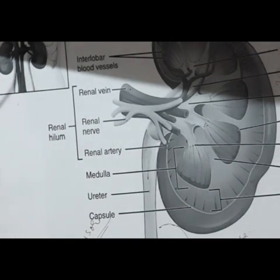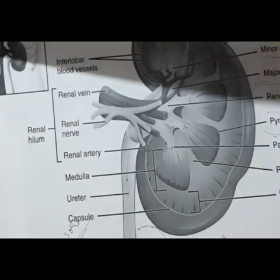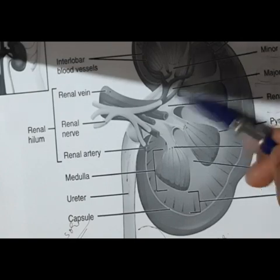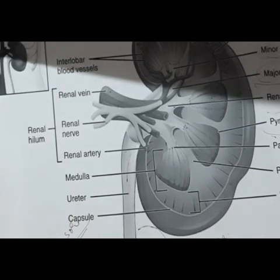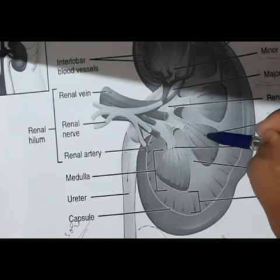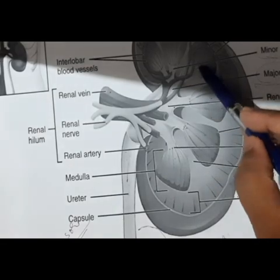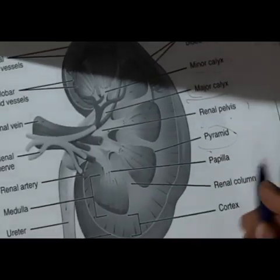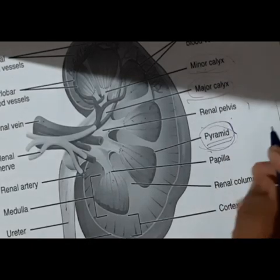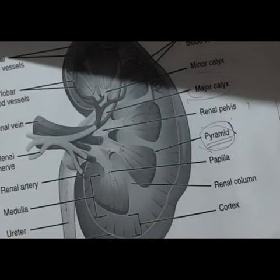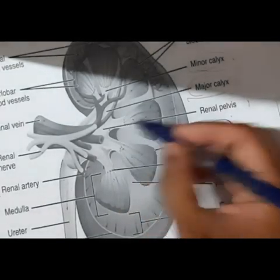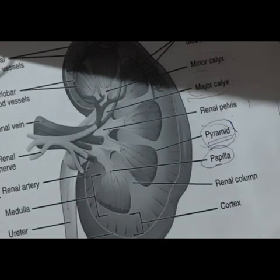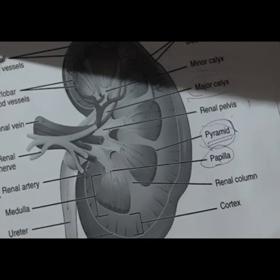Sometimes the medulla is further classified as outer medulla and inner medulla, depending upon the distance from the cortex. Typically, inside the medulla you can see cone-shaped structures called pyramids. The tip of each pyramid is called the papilla. The pyramids are arranged radially around the hilum with the papilla pointing towards the hilum.